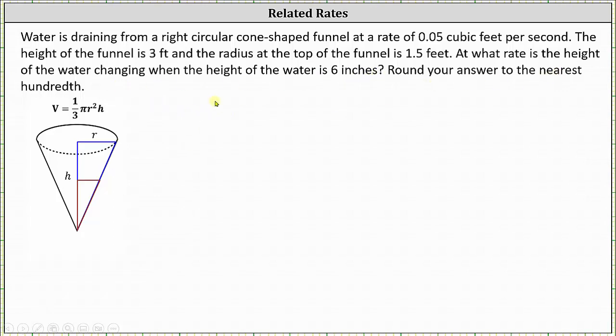So the funnel looks like the right circular cone below, where we have the height and the radius of the funnel, and the volume is equal to one-third pi r squared h, where r is the radius and h is the height.